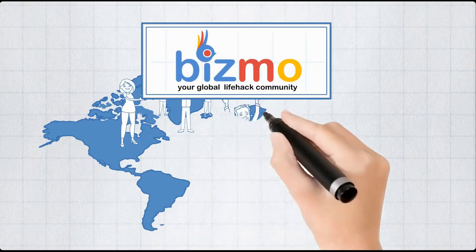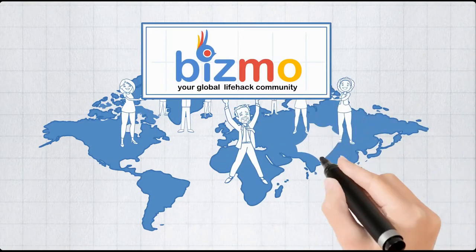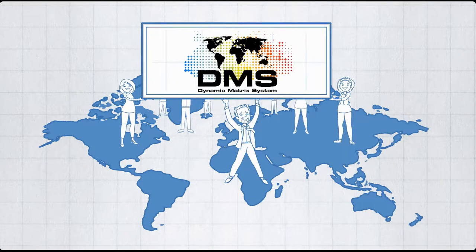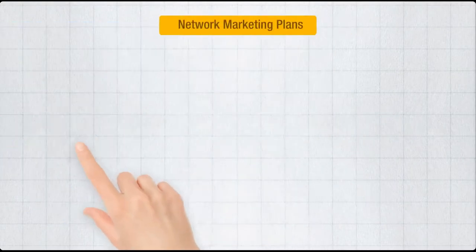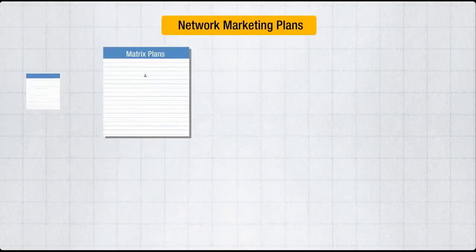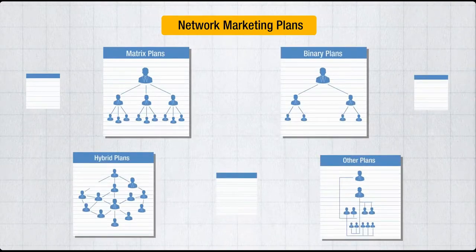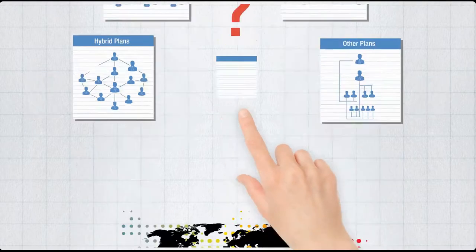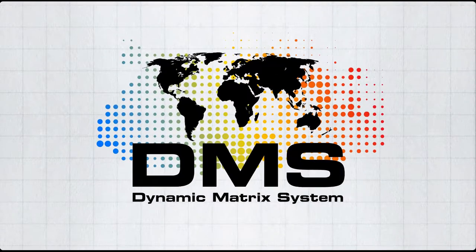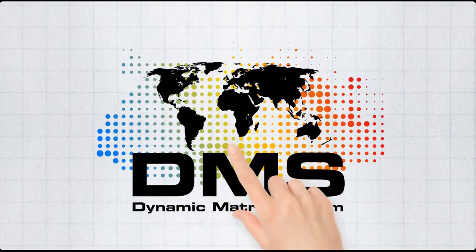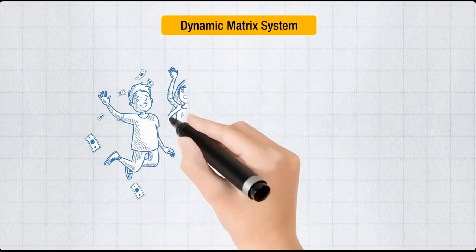Bismo, your global lifehack community, proudly presents DMS, the most advanced network plan of all time. There are different kinds of marketing and compensation plans: matrix plans, binary plans, hybrid plans, and many more. Which one is best? Bismo gives the ultimate answer to this question with DMS, the Dynamic Matrix System.